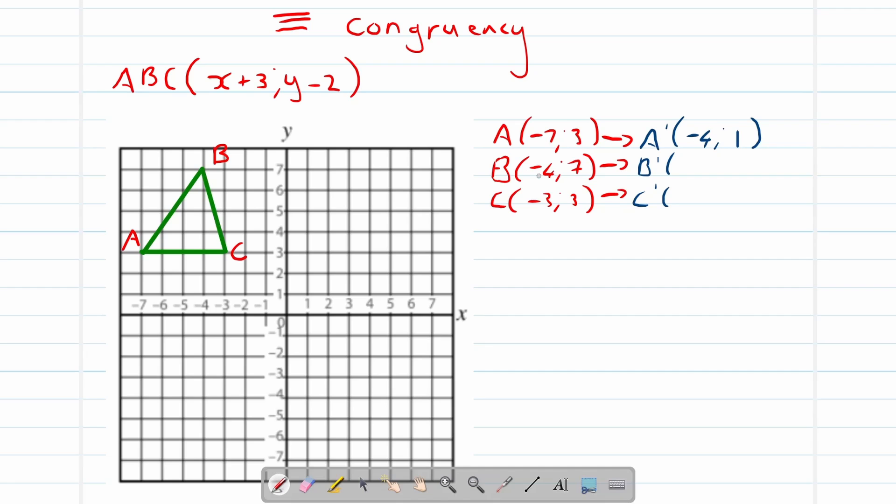The same here with B. From negative 4 plus 3 is negative 1. 7 minus 2 is 5. C, negative 3 plus 3 is 0, and the y will be 3 minus 2, that will become 1.